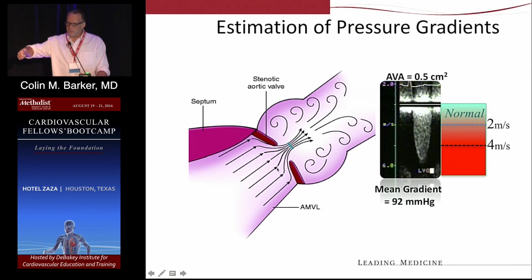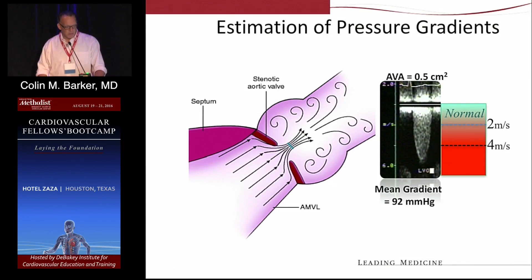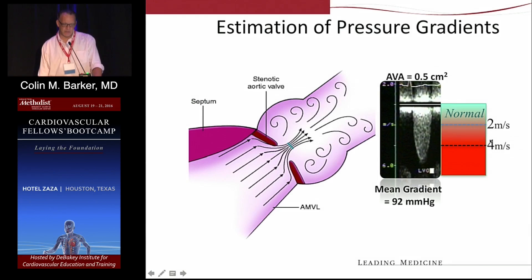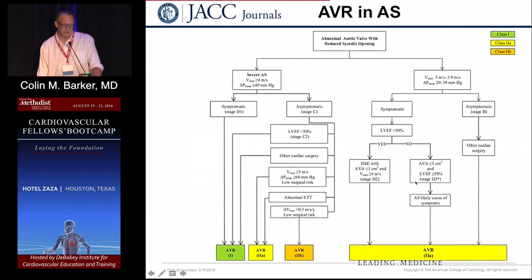Here is the Doppler finding. Normal flow across the aortic valve is about 2 meters per second. Severe AS, as we now remember, is anything greater than 4 meters per second. This patient had almost a 6-meter-per-second jet, giving a mean gradient of 92 — so very severe.